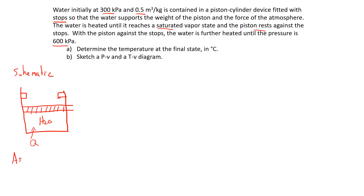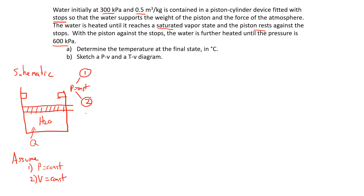This process is interesting because as the water is heated, the piston rises — that's a constant pressure process. But after it hits the stops, it becomes a constant volume process. So I have two processes going on, which means I need to separate this into three states. Process 1 to 2 is constant pressure, and process 2 to 3 is constant volume.